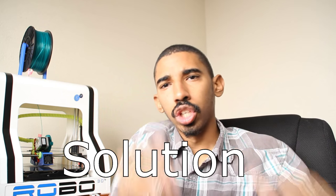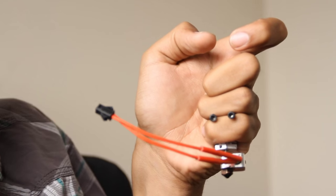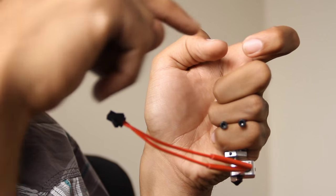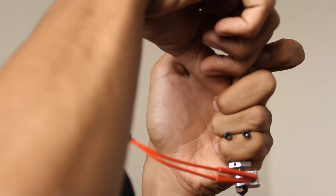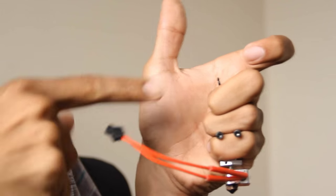Now time for step three, the solution to the problem. So jams are pretty easy. Let's go back to my hand being the extruder. Pretty much when you have a jam, you usually can go inside and grab tweezers and pull the filament out.